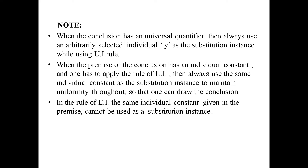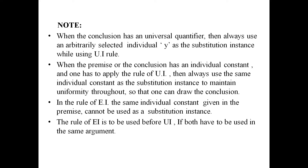Second, when the premise or the conclusion has an individual constant and one has to apply the rule of UI, then always use the same individual constant as the substitution instance to maintain uniformity. In the rule of EI, the same individual constant given in the premise cannot be used as a substitution instance. When both EI and UI are to be used in the same exercise, always use EI first and drop the existential quantifier before the universal quantifier.